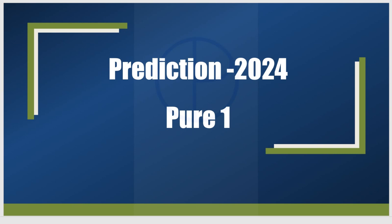Hello everyone, welcome to this video. In this video I'm going to discuss my predictions for the A-Level Mathematics paper 9709 Pure 1. After going through the last few year question papers, I tried to figure out the common questions and trends that CAE follows, and based on that I'm going to make predictions on how they can ask questions this time in 2024.